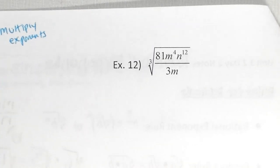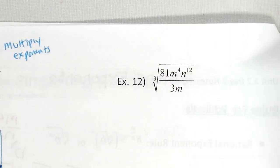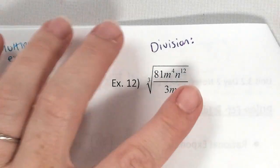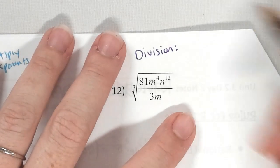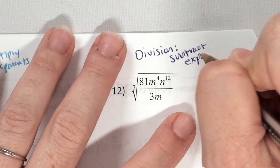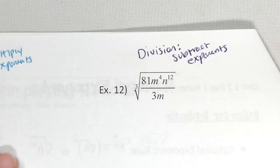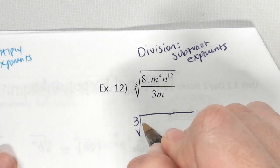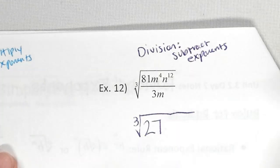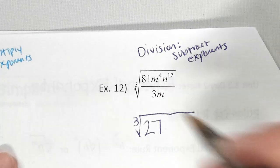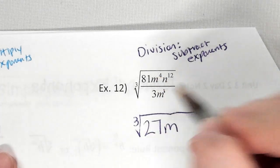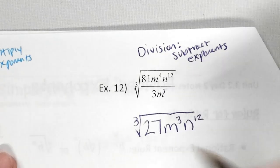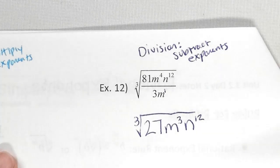Here we have division. I could separate, but I don't want to because I want to see if it simplifies first. What's the law of exponents with division? Subtract exponents. I'm keeping my cube root. What's 81 divided by 3? 27. Where are there more m's? On top — and we subtract: 4 minus 1 is 3. And n to the 12th — is there another n to simplify with? No, so it stays n to the 12th. Do I even need a fraction bar anymore? No. Didn't that make it look easier?